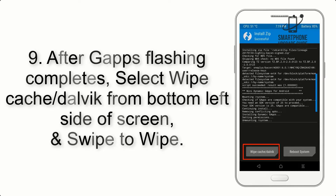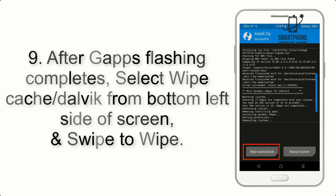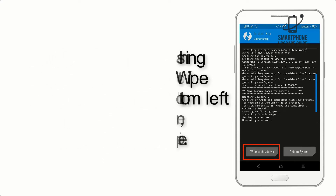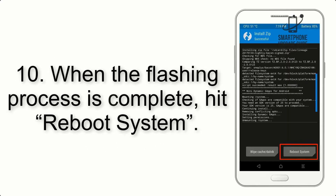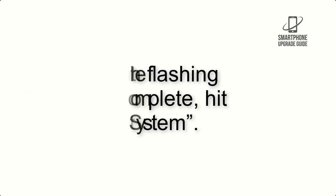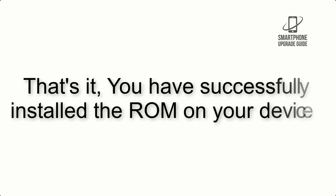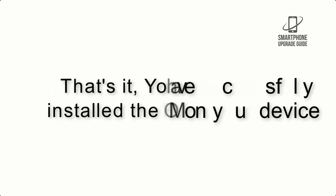Step 8: Flash the GApps zip package in the same manner. Step 9: After GApps flashing completes, select Wipe Cache and Dalvik from the bottom left side of the screen and swipe to wipe. Step 10: When the flashing process is complete, hit Reboot System. That's it — you have successfully installed the ROM on your device.